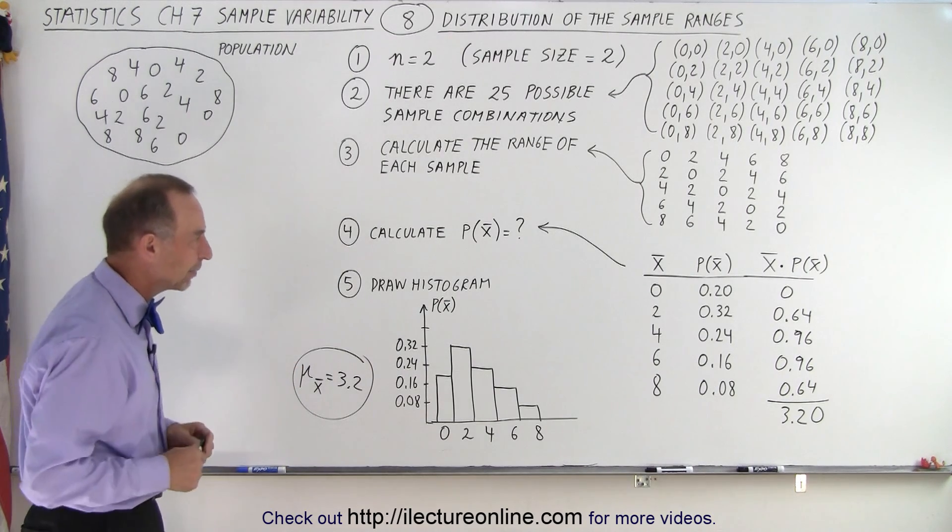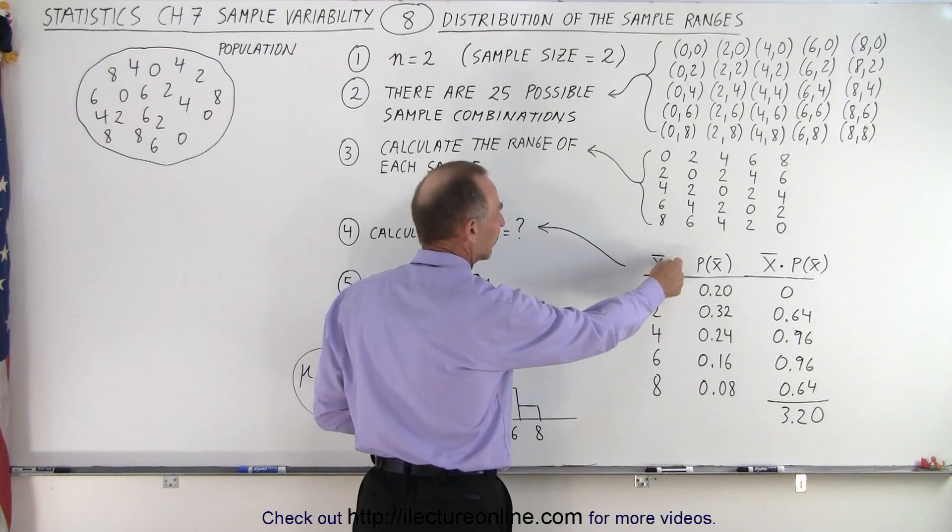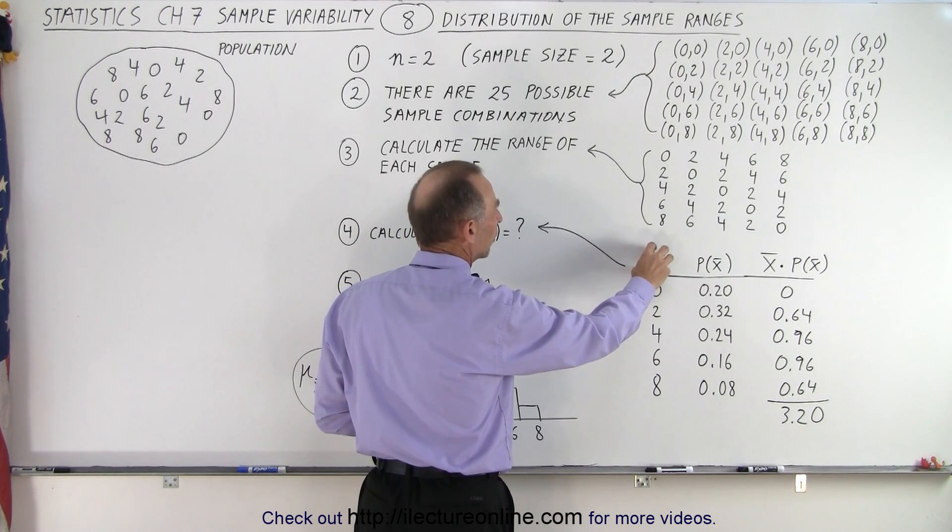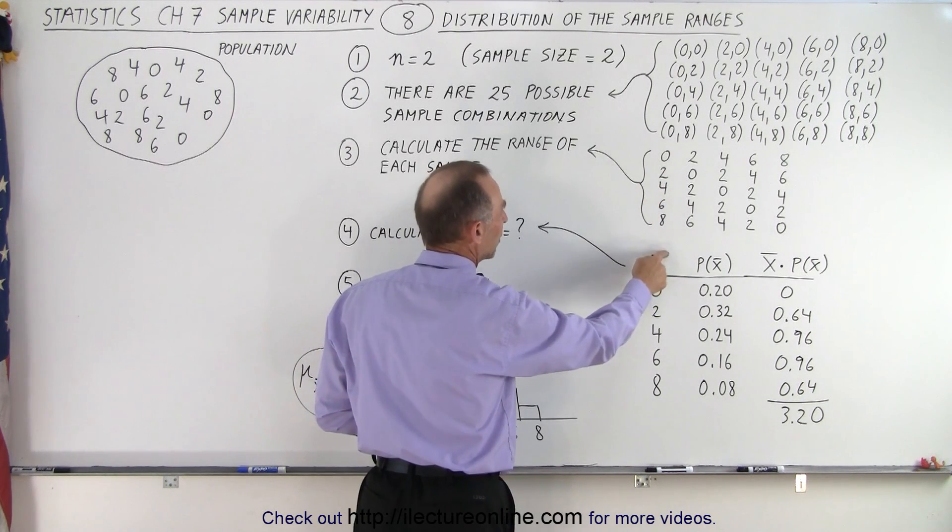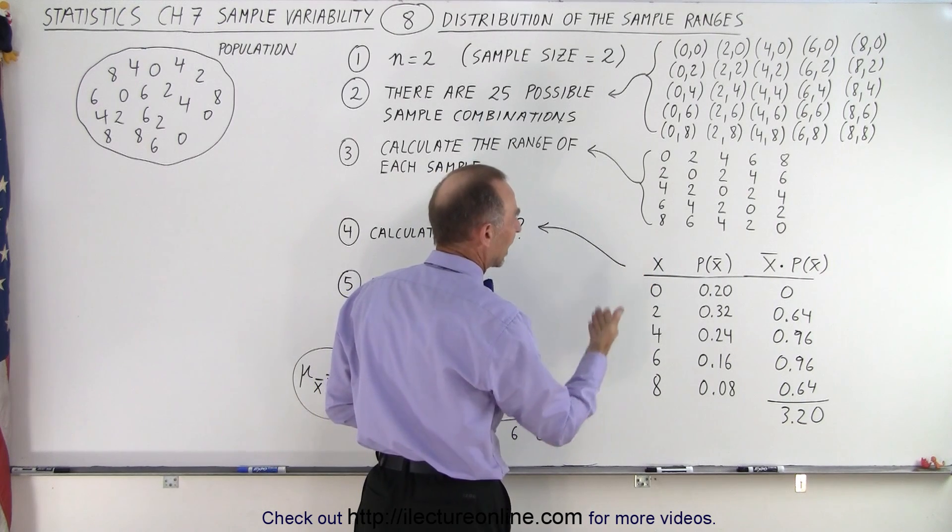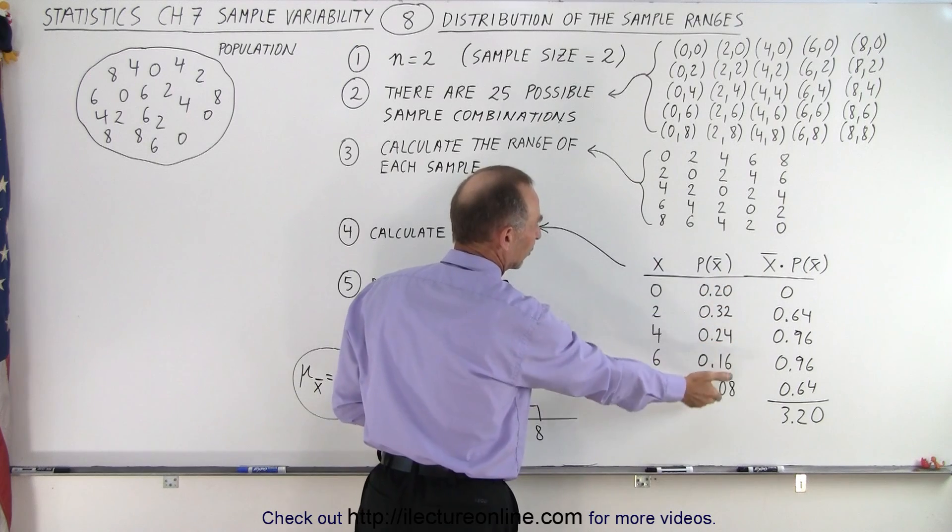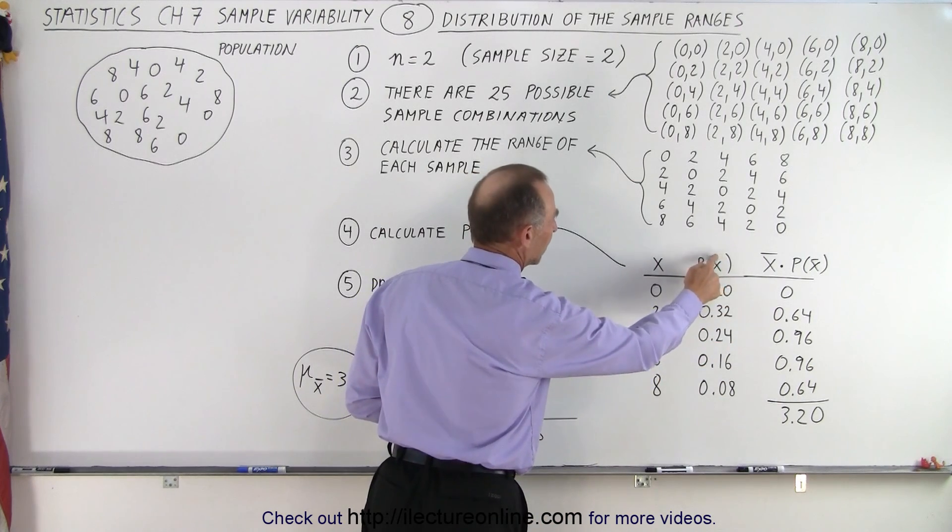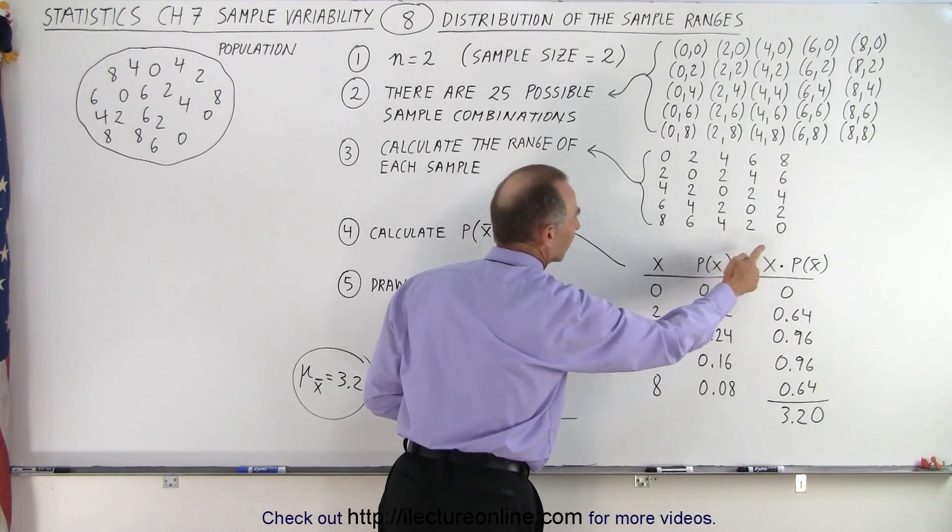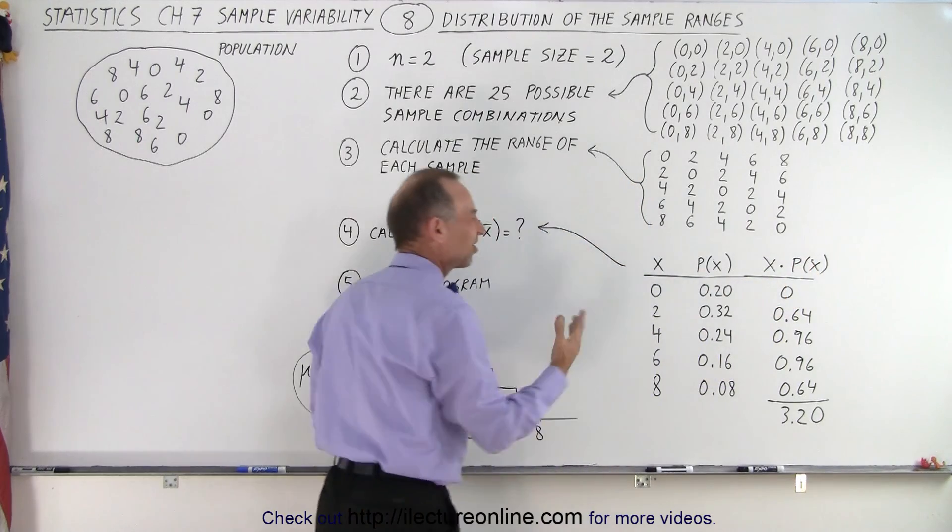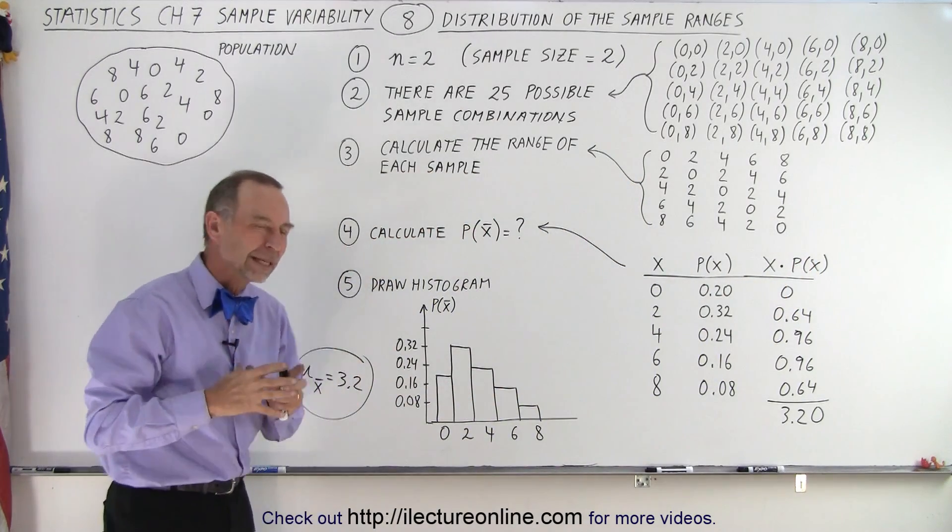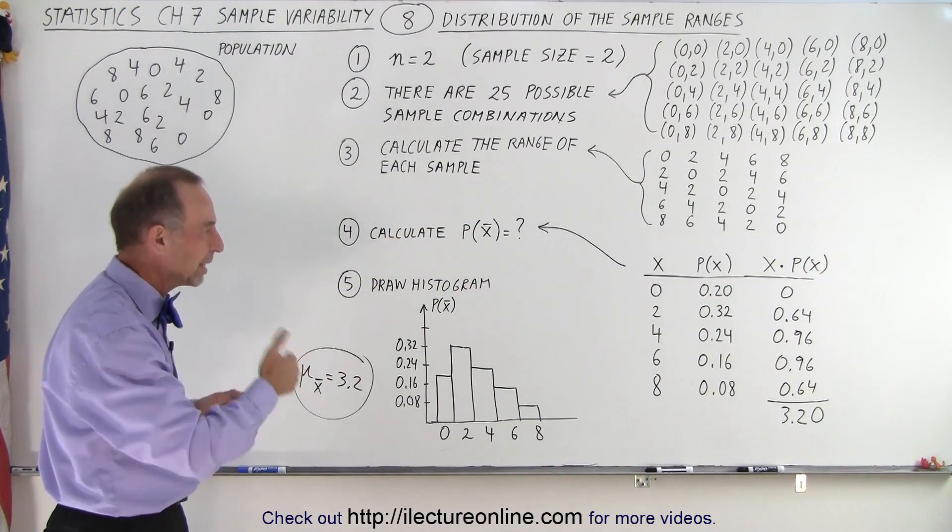So again, think of the x with a line on it as the average number or the typical number of ranges. So maybe we won't even put the average on there. We simply say x is the range and how many times does that occur, what's the probability of occurring. So maybe we want to write it like that rather than with a line on top, just to see that we're not really dealing with the averages but we're dealing with the ranges in this case.